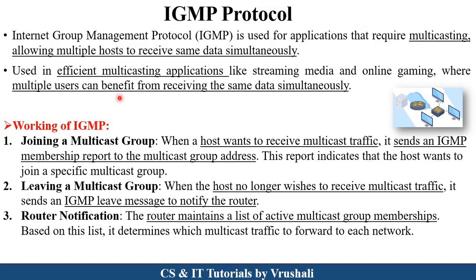Let's see how this protocol works. The first step is joining a multicast group. Consider there is one host that wants to multicast an online live streaming video. This host wants to receive multicast traffic, so it sends an IGMP membership report to all the multicast group addresses using IGMP protocol. All the other users and devices then use this particular message or information through IGMP protocol, and access is given to all users.